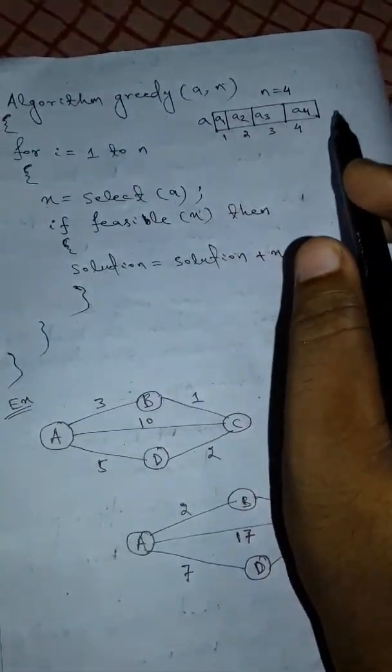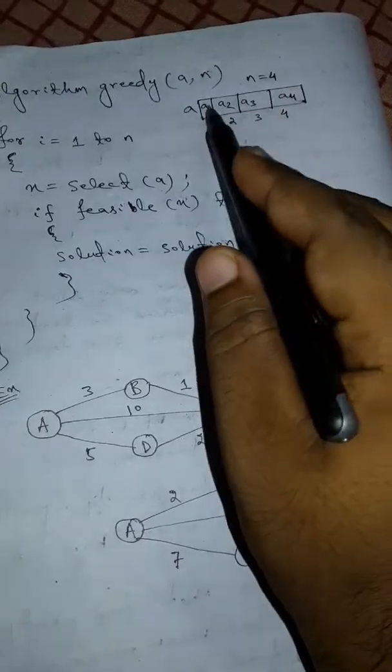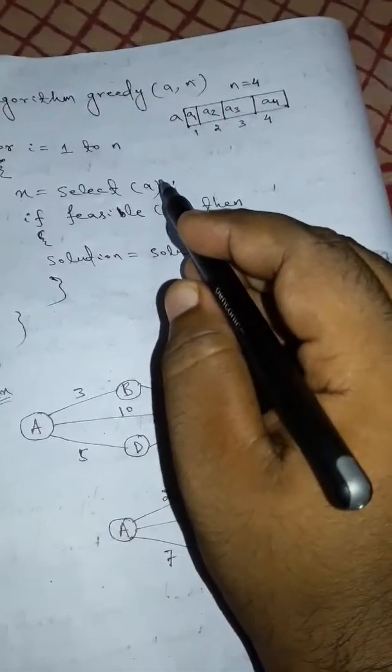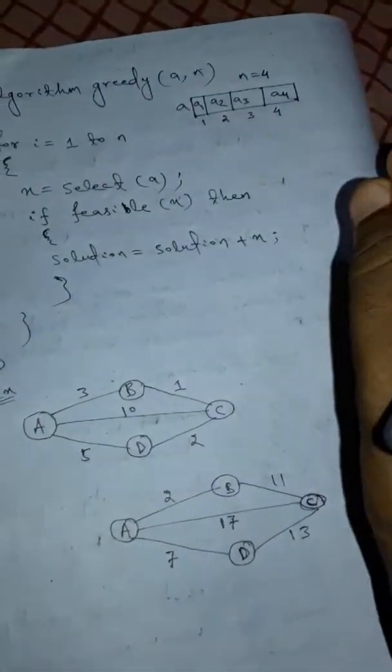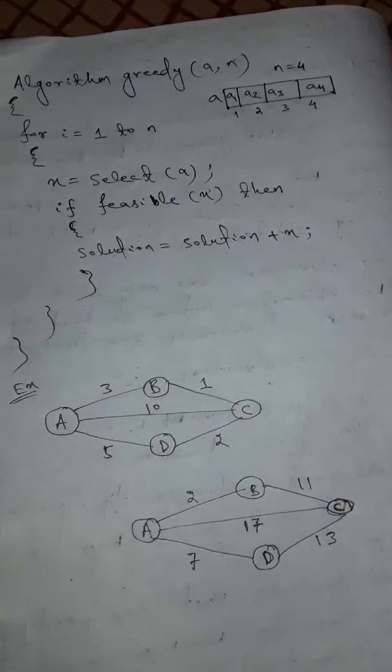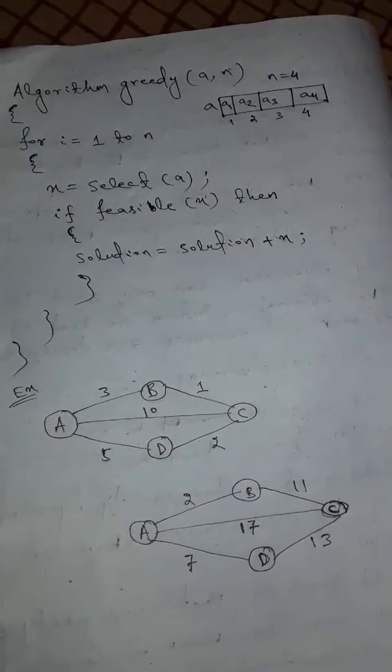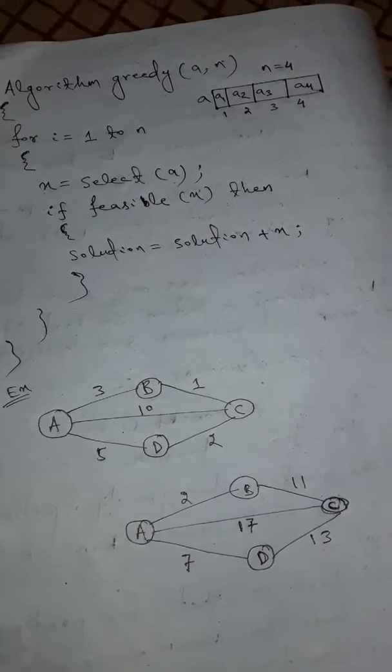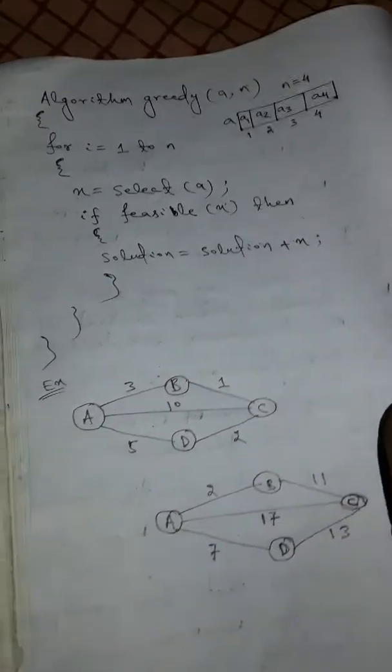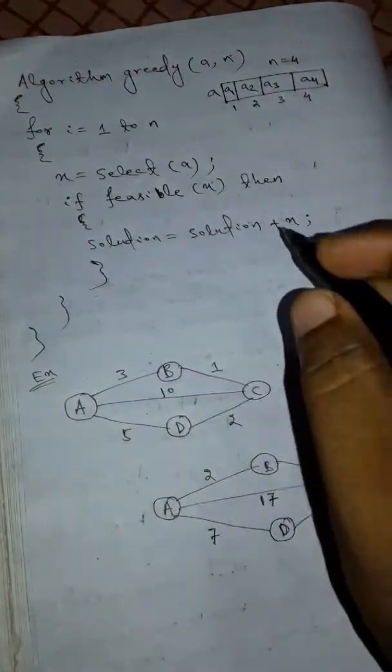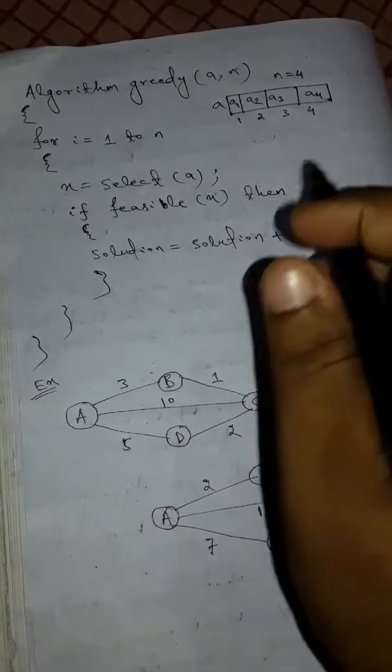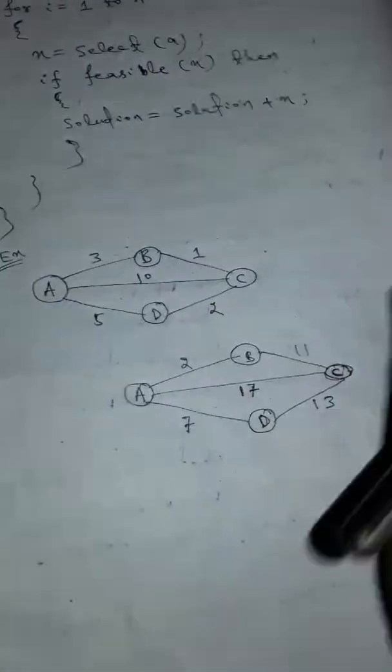Then what will be x? x is a variable. Select one from this data set A. A is a data set containing a1, a2, a3, a4. Select any feasible data item. Feasible means the best choice to get a global solution. Then the solution will be solution plus x, incrementing by x where x is a data set item.